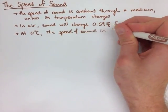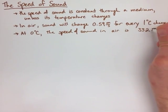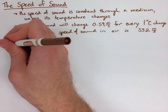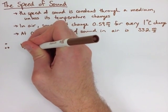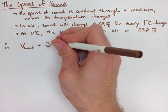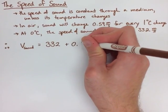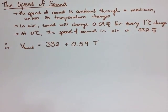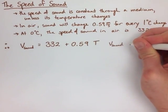With that being said, we can create a formula for the speed of sound, where the velocity of sound is 332 plus 0.59 times T, where V sound is in meters per second, and T is temperature in degrees Celsius.